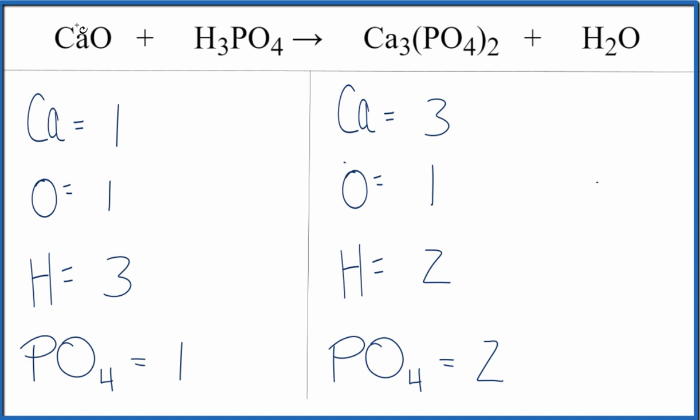So let's do the calcium first. I'll put a three in front of the CaO, so one times three gives me three calcium atoms. Those are balanced, and then one times three gives me three oxygen atoms.